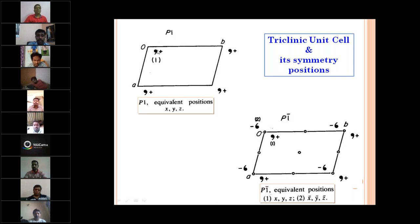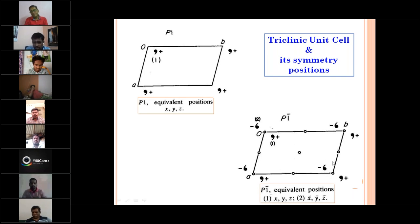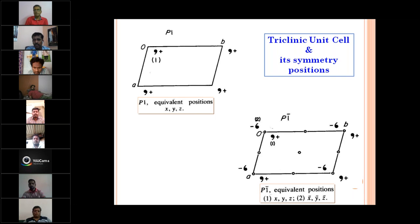What do you mean by equivalent positions? If there is a point XYZ, then what is the equivalent point of this XYZ in another unit cell or within the unit cell? In a triclinic P1-bar, the least symmetric system, there are two points in your unit cells — two asymmetric units in your system. One is called the asymmetric unit, another is called the symmetric unit. How these two units are related? If one is XYZ, then the other is minus X, minus Y, minus Z. So they are inversely connected — there is an inversion symmetry. That is your triclinic unit cell and its symmetry operations.